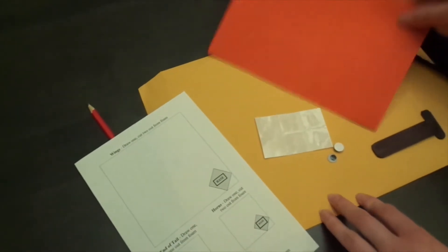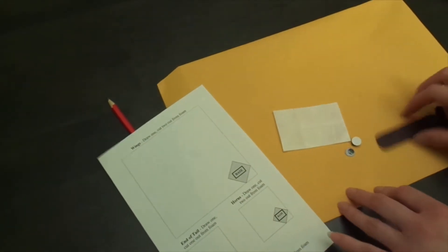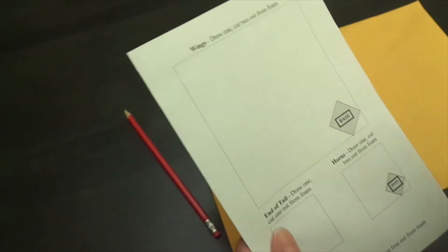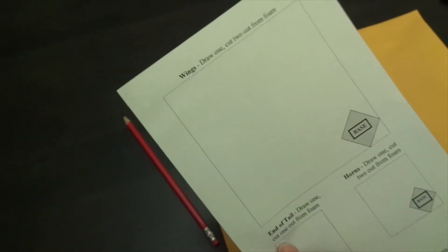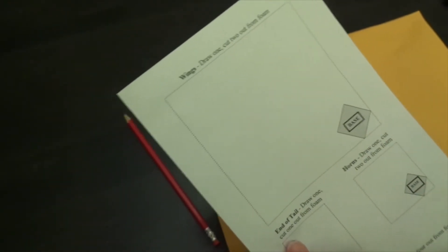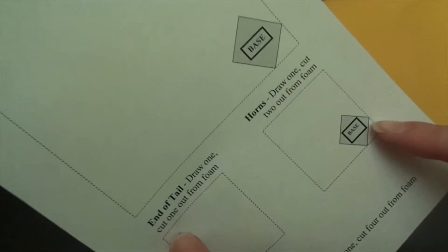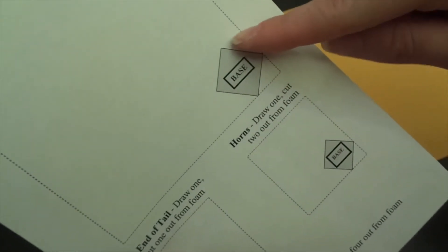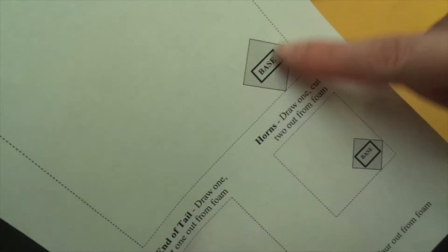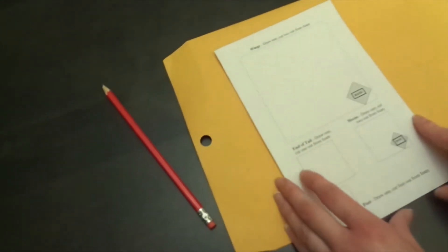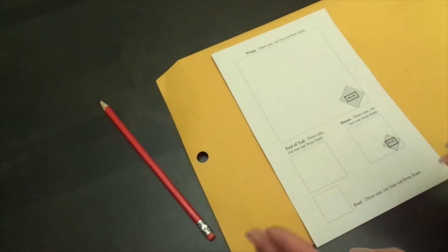Now to start with you're going to draw on the template the shape that you want for the wings, the horns, the end of the tail, and the feet. These squares outline the maximum size that those can comfortably be before they start to be too heavy for your dragon. And then these two have the base labeled because that's where your glue dots are going to need to be, so you will need to start at your base. Now you can draw whatever shape you want, the shape that you use might make your dragon look a little more scary or a little less scary.